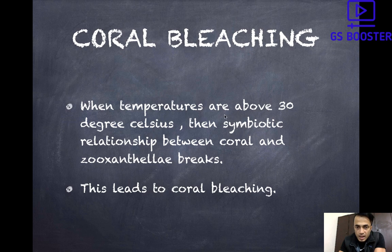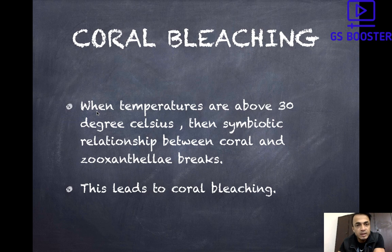To recap the coral bleaching concept: the symbiotic relationship between zooxanthellae algae and corals breaks down. The word 'zooxanthellae' is very important — you need to remember it, because it can be directly asked in prelims and mains. An answer about corals is incomplete without this particular word — corals are incomplete without zooxanthellae. When temperatures are above 30 degrees Celsius, the symbiotic relationship between corals and zooxanthellae breaks, and this leads to coral bleaching.